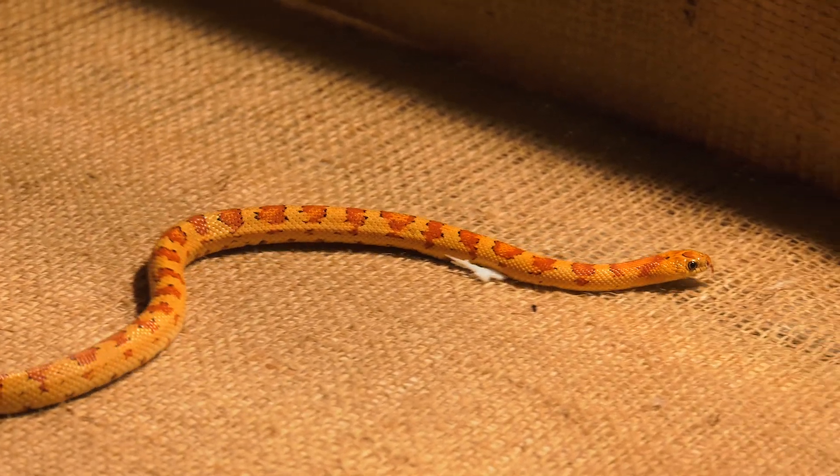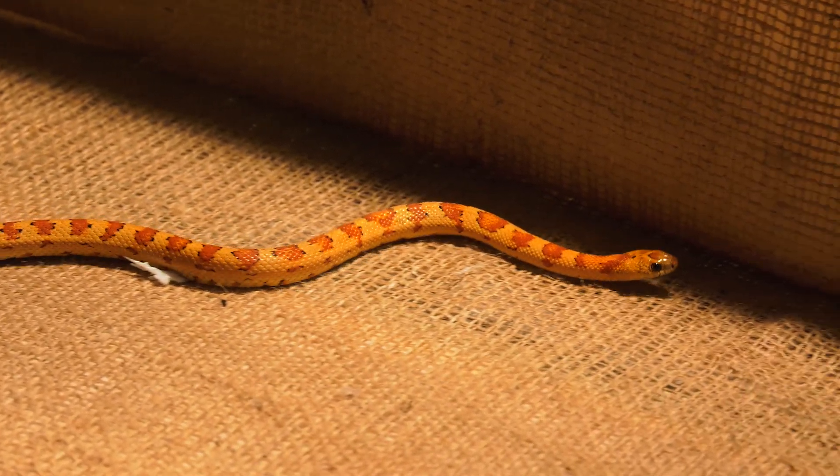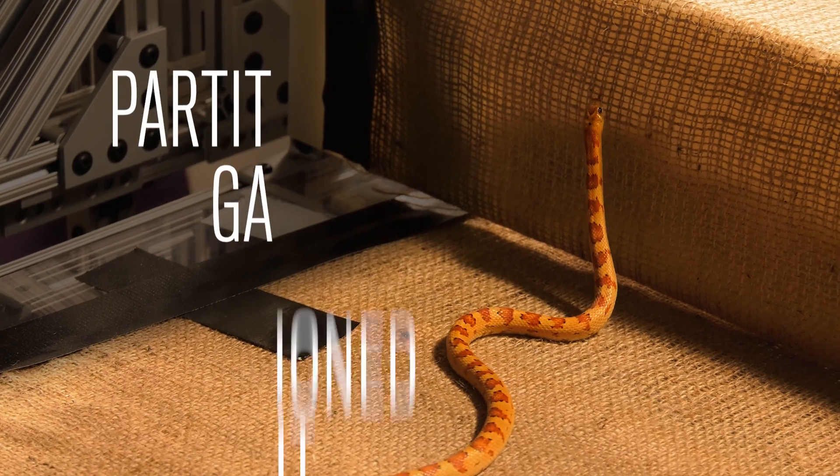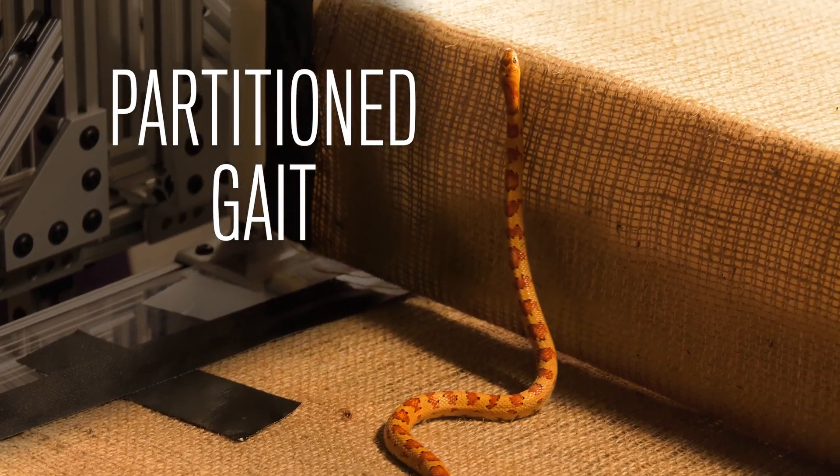We studied the king snake. It is a generalist, meaning that it can live and move well in many kinds of environments. We found that the snake uses what we call a partition gate, which people haven't described before.